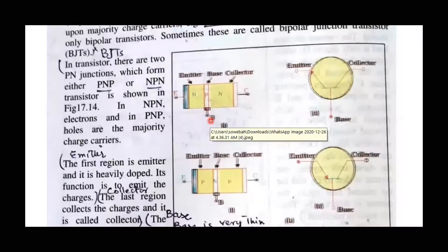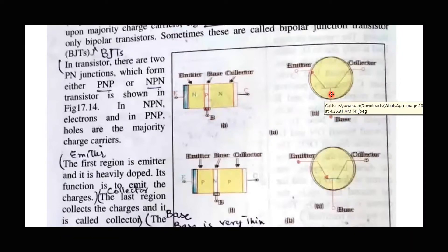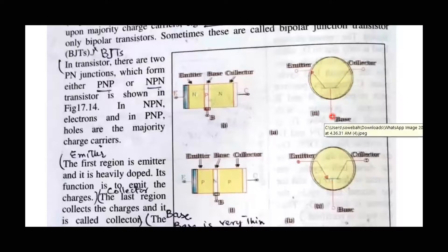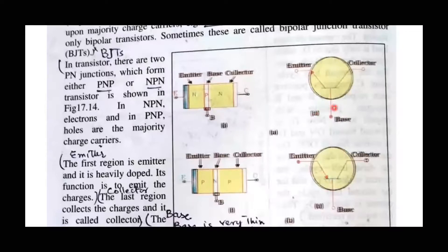In the bipolar transistor, we call these the emitter-base junction and the collector-base junction — there are two junctions. In electronic circuit diagrams, we represent the transistor using symbols. The transistor is always shown with an arrow on the emitter terminal. If the arrow points outward, it is an NPN transistor. If the arrow points inward, it is a PNP transistor.